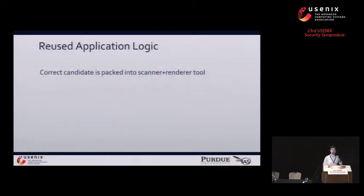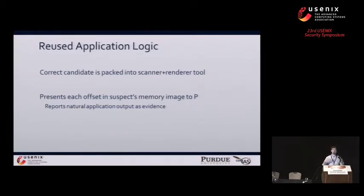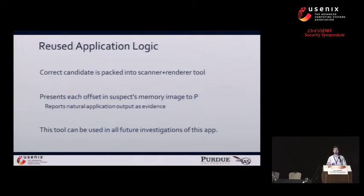So once Discrete has identified a correct entry point candidate, it's going to package that candidate into a scanner plus renderer tool to reuse that P logic. The scanner plus renderer tool also works using cross-state execution — it's going to present every offset within a suspect's memory image to that P logic, and any application output that is naturally generated gets reported to the investigator as evidence. These scanner plus renderer tools are reusable and can be distributed to various field investigators to be used in different investigations of this same app.